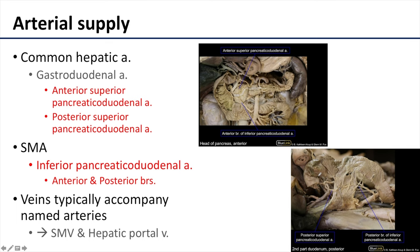The duodenum, and by its association the head of the pancreas, is supplied by the pancreaticoduodenal arteries. Superiorly, these arteries are branches of the gastroduodenal artery, which is a branch of the common hepatic artery. This gastroduodenal artery branches into the anterior superior pancreaticoduodenal artery and the posterior superior pancreaticoduodenal artery, which hug both the duodenum and the head of the pancreas from above.